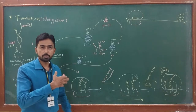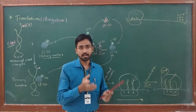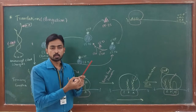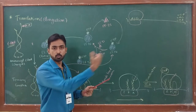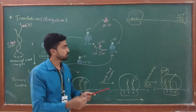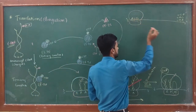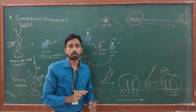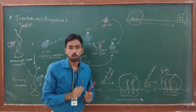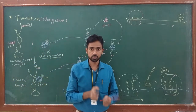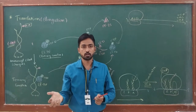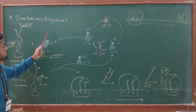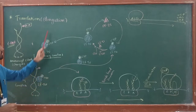After formation of the 70S initiation complex, new amino acids come into the picture with the help of tRNA. tRNA gets attached to the P and A sites, and two different tRNAs bring two different amino acids. After formation of the first peptide bond, the ribosome can move towards the terminator codon. The process in which the ribosome moves from start codon to stop codon on mRNA in the five-prime to three-prime direction is called elongation.